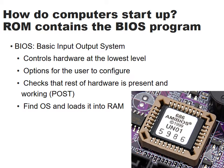So why do we need ROM and RAM? ROM contains a little program called the BIOS — Basic Input-Output System — which controls the hardware at the lowest level on the computer. When you buy a computer, the BIOS is already in the ROM. The BIOS also allows the user to configure a whole lot of options on the computer. When the BIOS runs, it checks that the rest of the hardware is present and working — this is your power-on self-test, or POST. Once this has been run, the BIOS goes to find the operating system on the hard drive and loads it into RAM so that the computer can start operating normally.